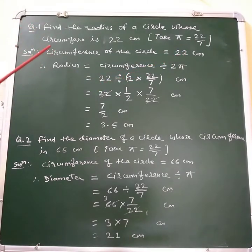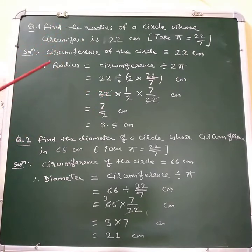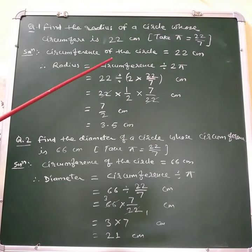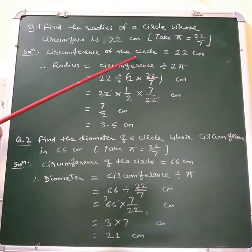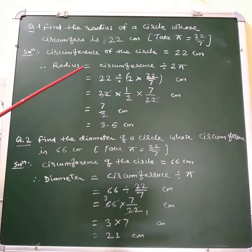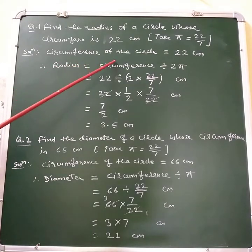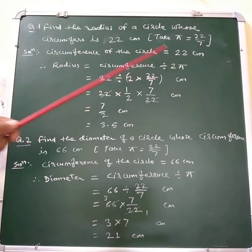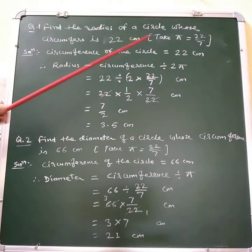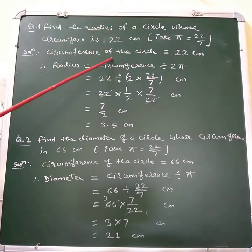You know the formula to find the radius of a circle if the circumference is given. The radius of the circle is equal to circumference divided by 2π. If circumference is given, then we use this formula: radius equals circumference divided by 2π.